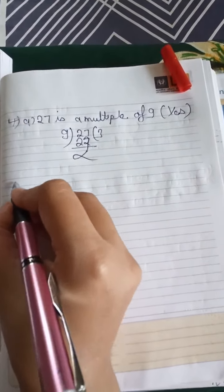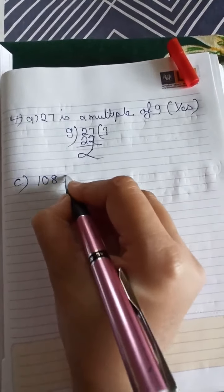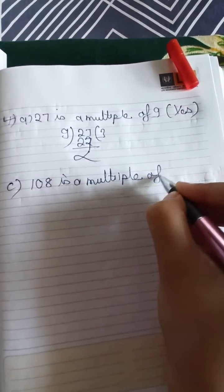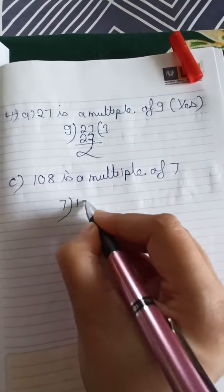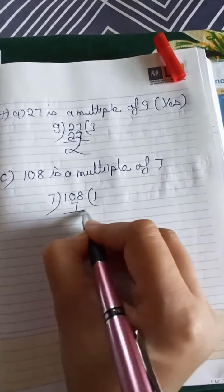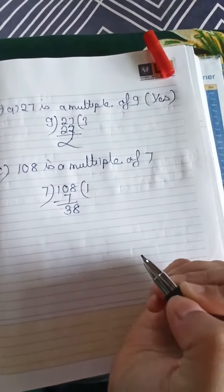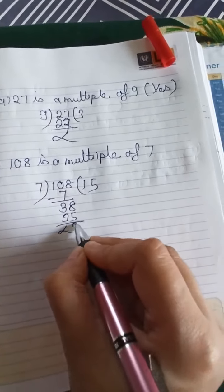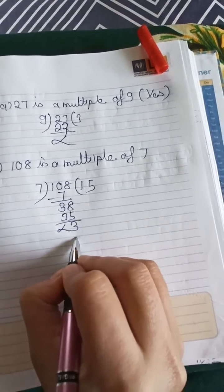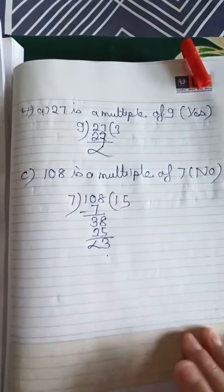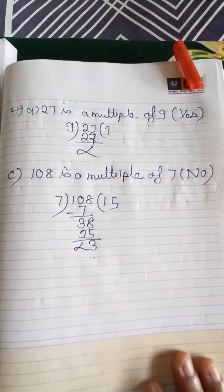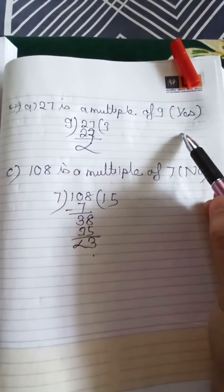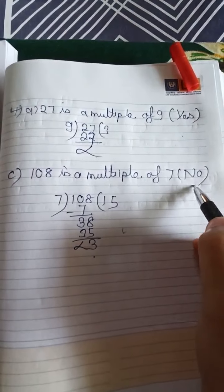I will tell one more question — question C: 108 is a multiple of 7. So divide it. 108 divided by 7 — you get a remainder of 3, so this is not completely divided. So we will write here no. This is the way you have to do question number 4: divide it, and if it is completely divided then write yes, and if it is not divided then write no.